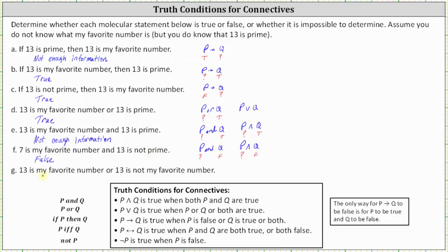For the last statement: 13 is my favorite number, or 13 is not my favorite number. The statement is in the form of P or Q. We don't know whether 13 is my favorite number or not, but one of the two statements must be true — either 13 is my favorite number, or 13 is not my favorite number. So because P or Q is true, this or statement is true.